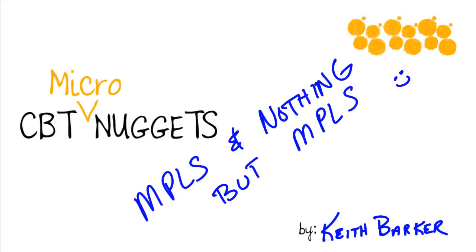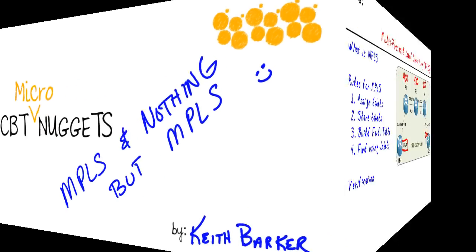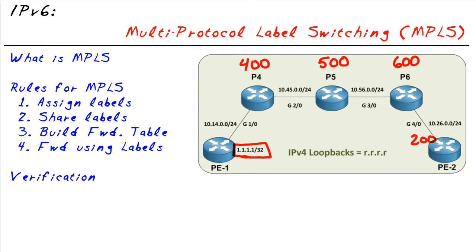Multi-protocol label switching and nothing but multi-protocol label switching. Let's begin. There are some absolutely amazing applications that work on top of an MPLS infrastructure like Layer 3 VPNs and pseudo-wires, but I'd like to clear those away for this nugget so we can take a look at just MPLS by itself. What exactly is it? What does it do? And how do we verify it's working?